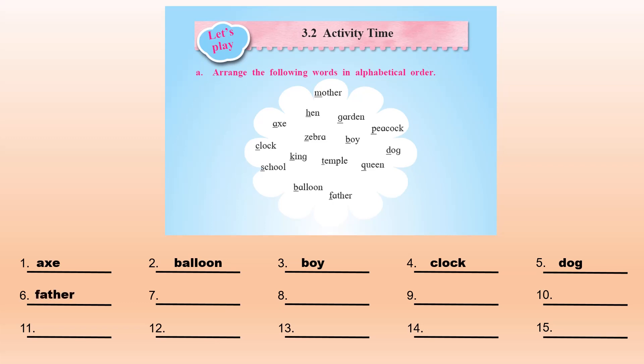Our seventh word is garden. Our eighth word is hen. Then our next word will be king. Correct.